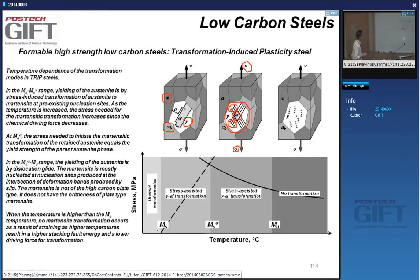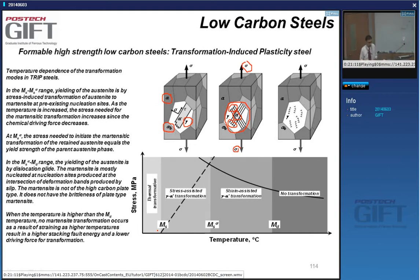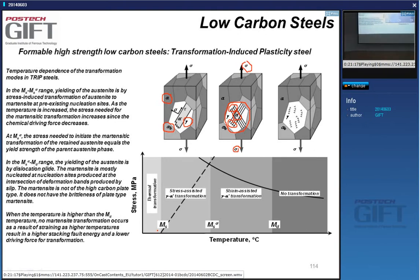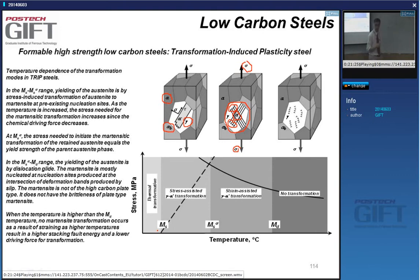In TRIP steels we want martensite during deformation but not when we apply just stress. The MS-sigma temperature defines the range where you have stress-induced martensite versus strain-induced martensite. For TRIP steels, room temperature has to be in the range of strain-assisted transformation. The free energy of a phase is a function of temperature and composition, but it's also influenced by stress — when I apply an elastic stress I add energy, which means higher free energy and less stability.